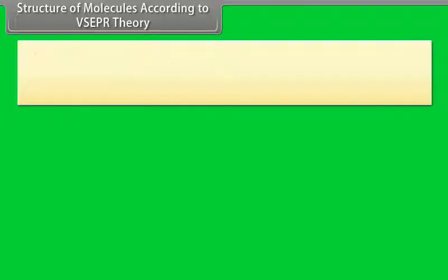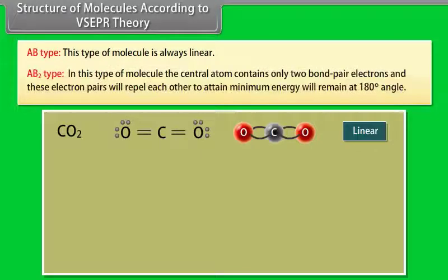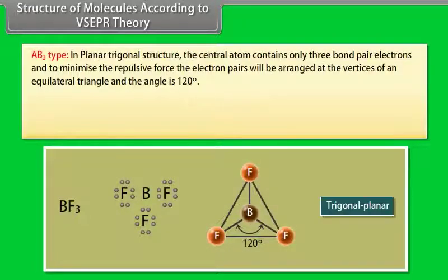According to VSEPR Theory, the AB type molecule is always linear. In AB2 type, the central atom contains only two bond pair electrons; these pairs repel each other to attain minimum energy and remain at a 180-degree angle. In AB3 type (planar trigonal structure), the central atom contains only three bond pair electrons; to minimize repulsive force, the electron pairs are arranged at the vertices of an equilateral triangle with a bond angle of 120 degrees.